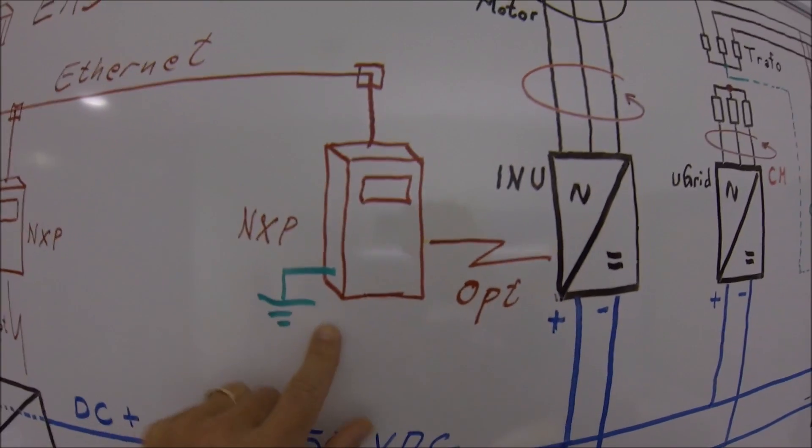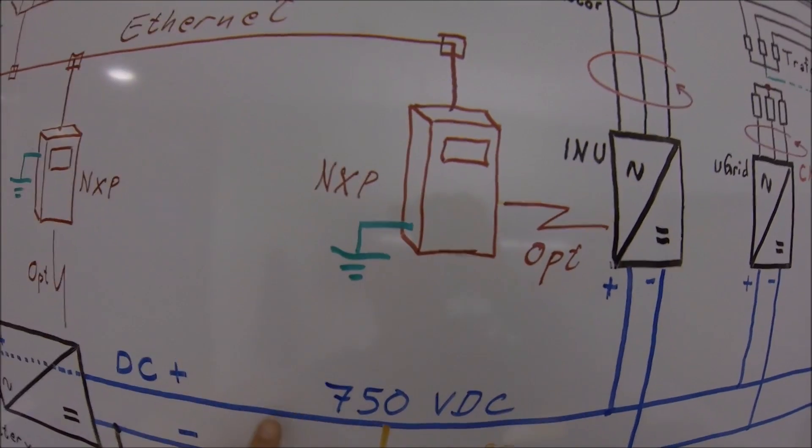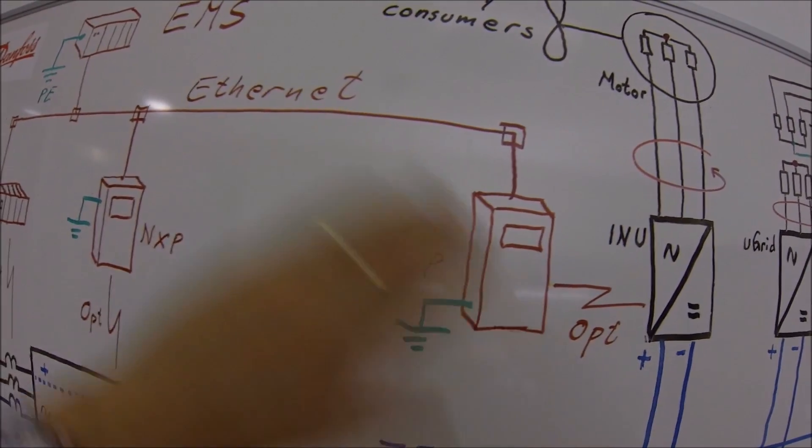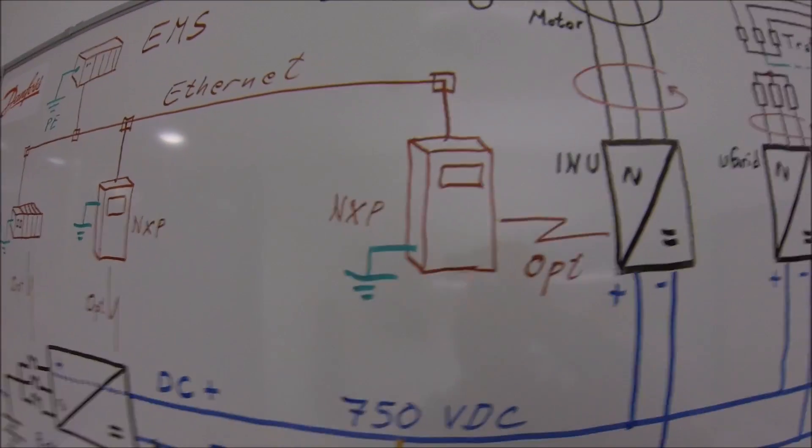If you in some way get a connection between here and here, you have currents going on in your control system, which probably will disturb it.